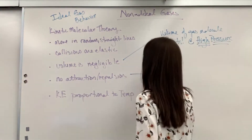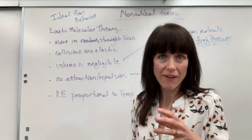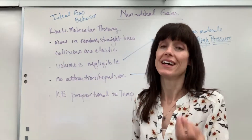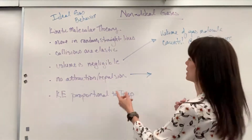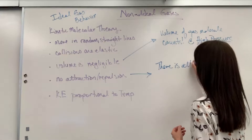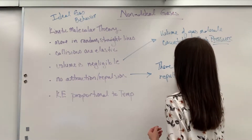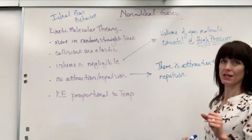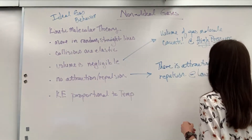The second deviation happens with no attraction or repulsion. Normally, gas molecules are moving really fast and far apart, so they can't attract or repulse — there are no intermolecular forces. Except at really low temperatures. So the deviation is: there is attraction and repulsion. That's your statement for non-ideal gas behavior, and it occurs at low temperatures.